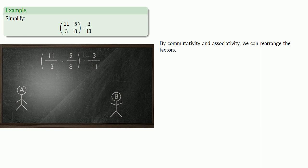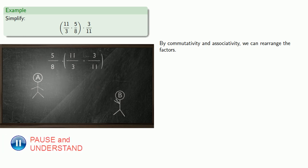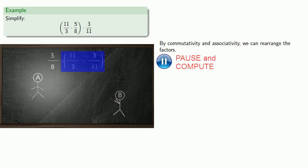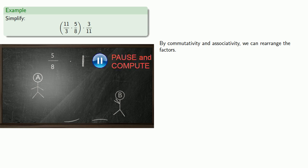We'll switch the order inside the parentheses, because we can. We'll regroup, because we can. And now, eleven-thirds times three-elevenths is one. And since I'm multiplying by one, I'll just be left with five-eighths.